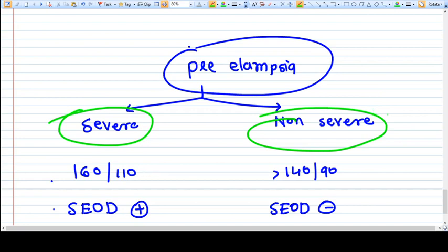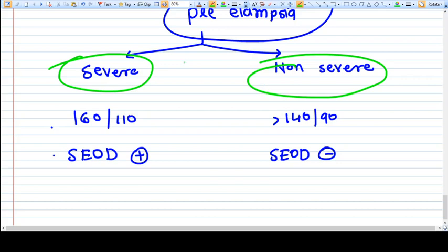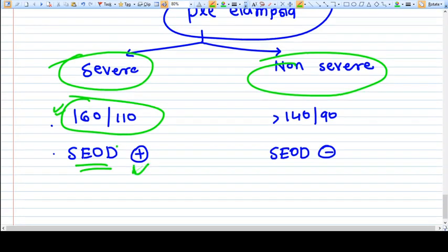This category is helpful to manage and get treatment for that patient. Severe preeclampsia means the BP is more than 160 and 110, and the signs of end organ damage are present in very good amount. Non-severe means the BP is more than 140/90 but less than 160/110.